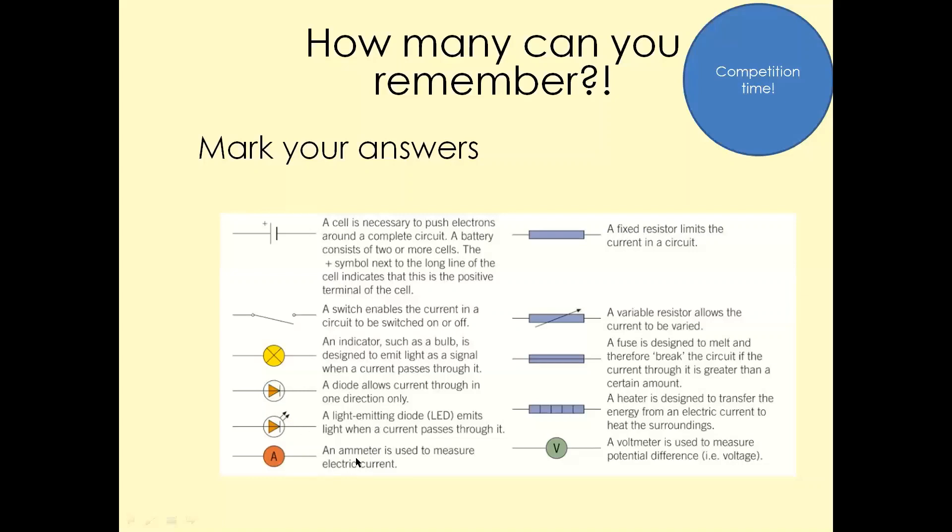That's a symbol for an ammeter used to measure current. And we know we use amps to measure current. This is a resistor, a fixed resistor, and that will limit the amount of current passing through a device or in the circuit. This is a symbol for a variable resistor, and you can use this resistor to increase or decrease the amount of current in any circuit.